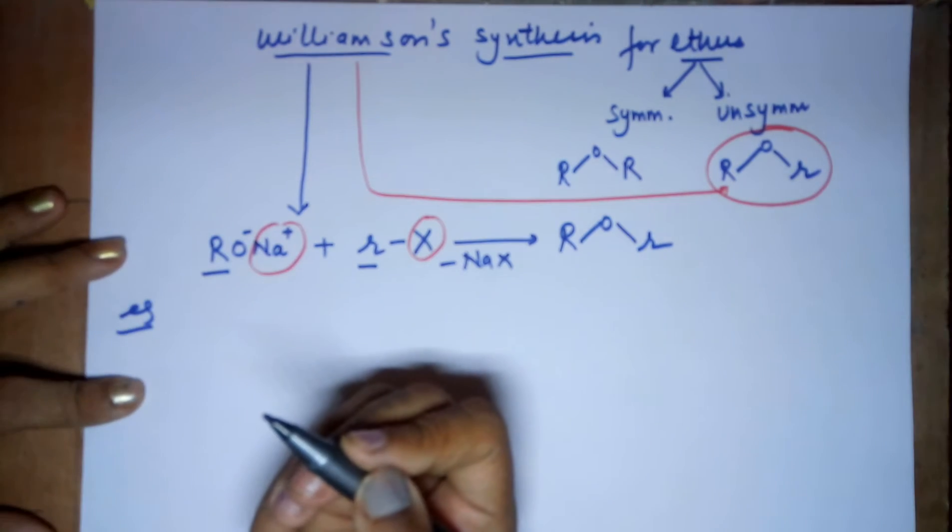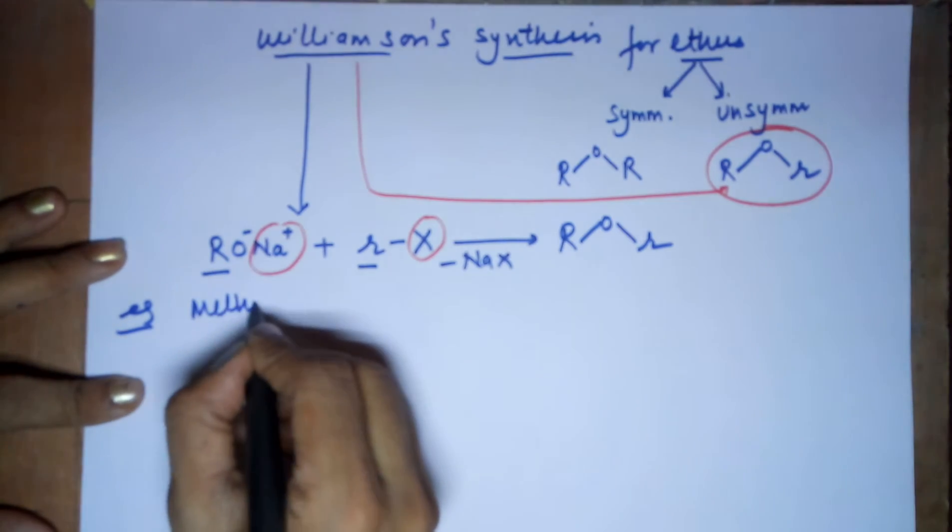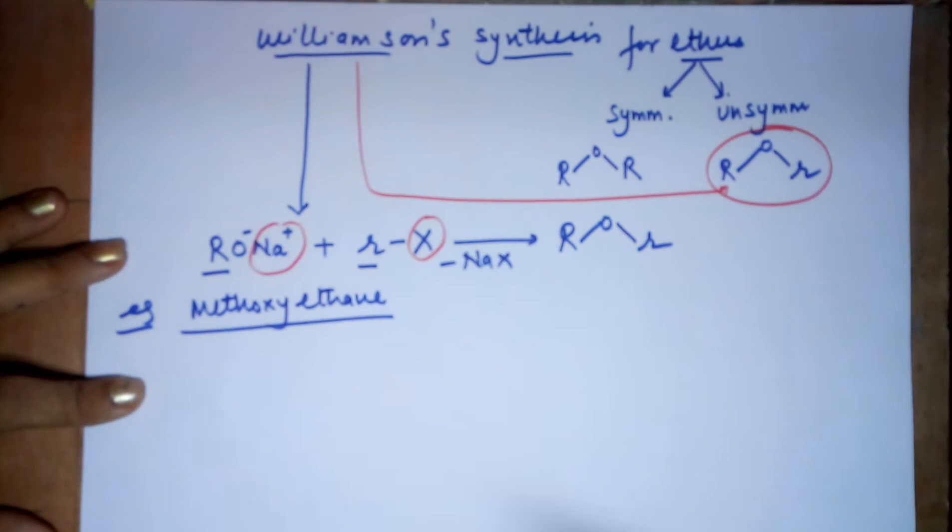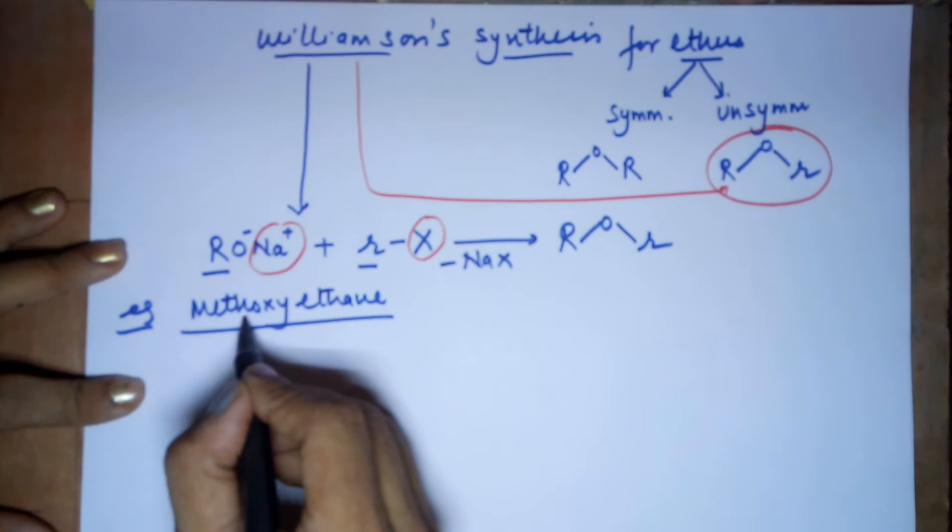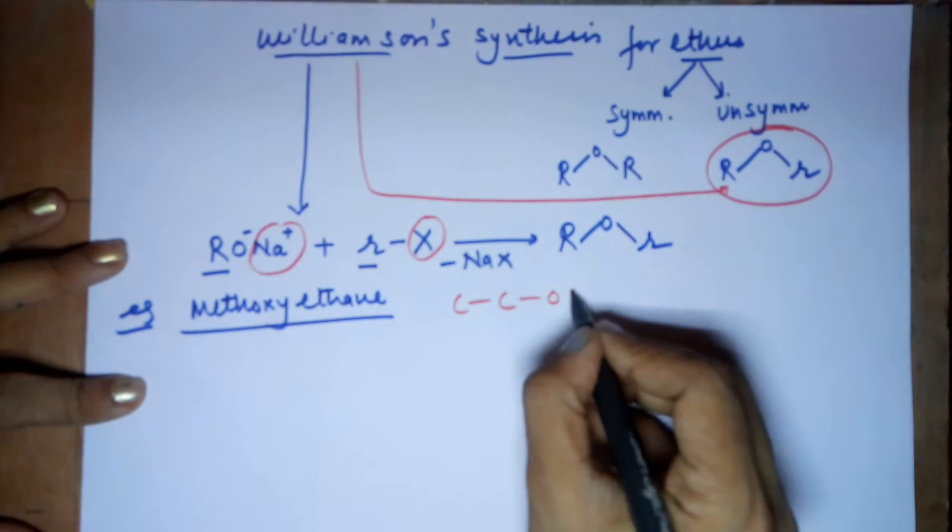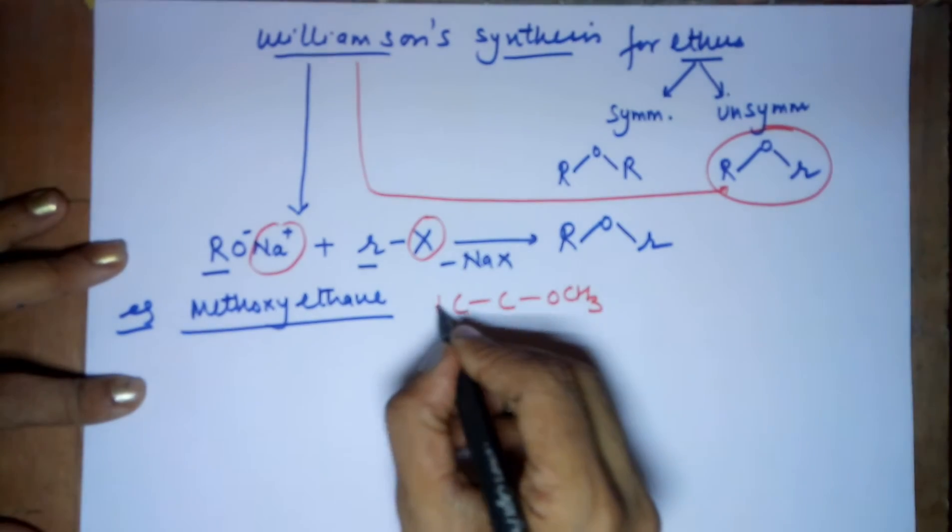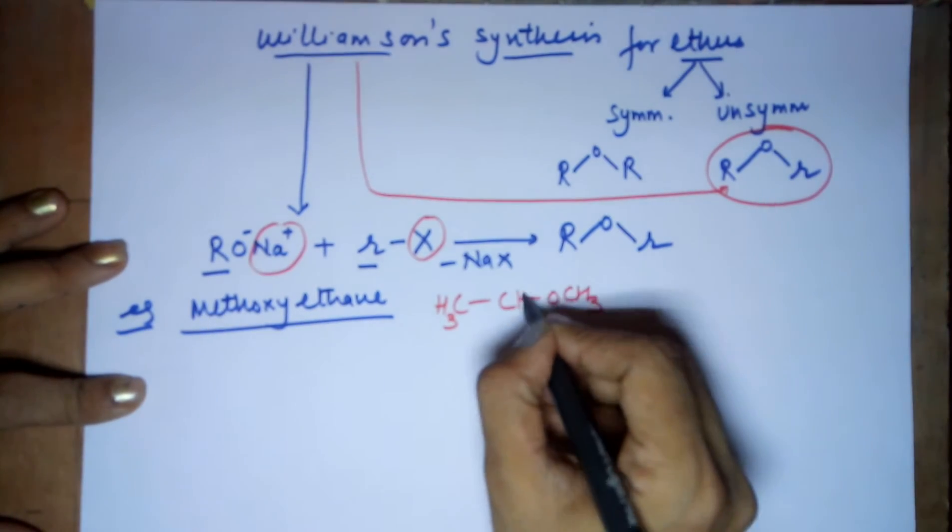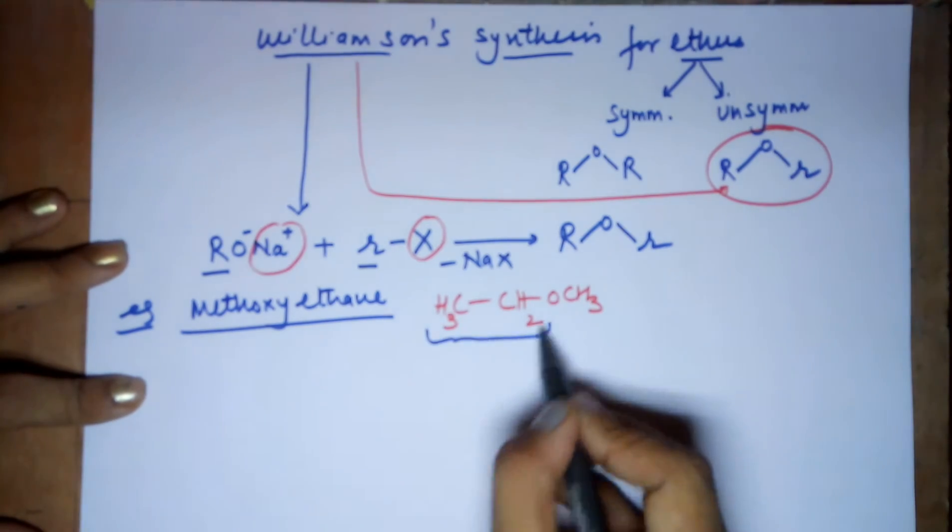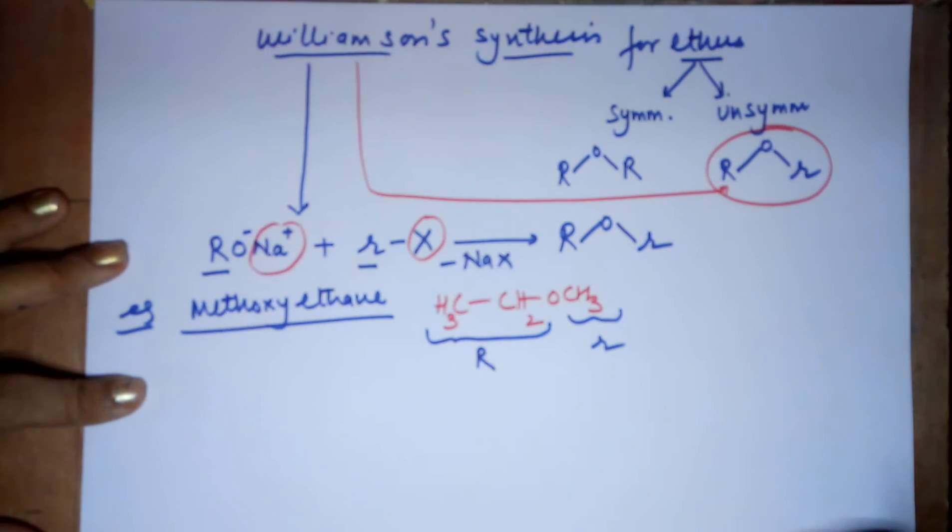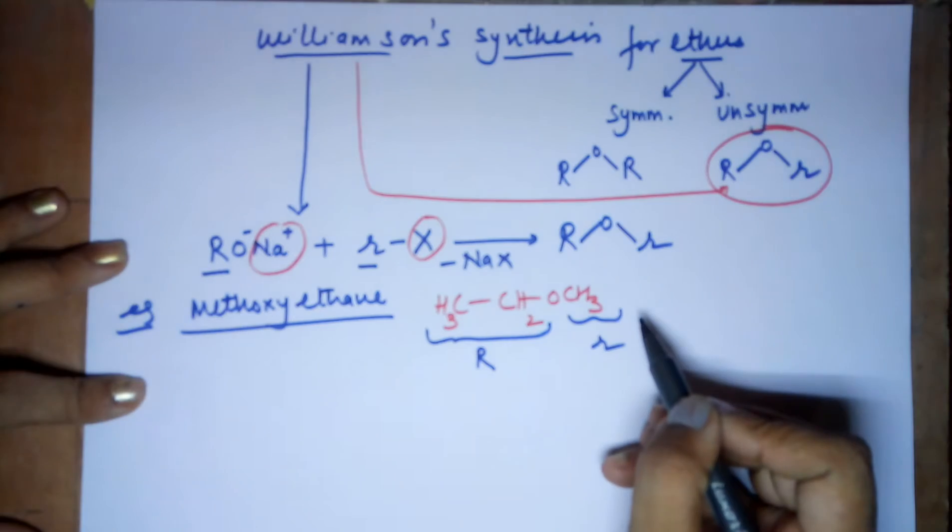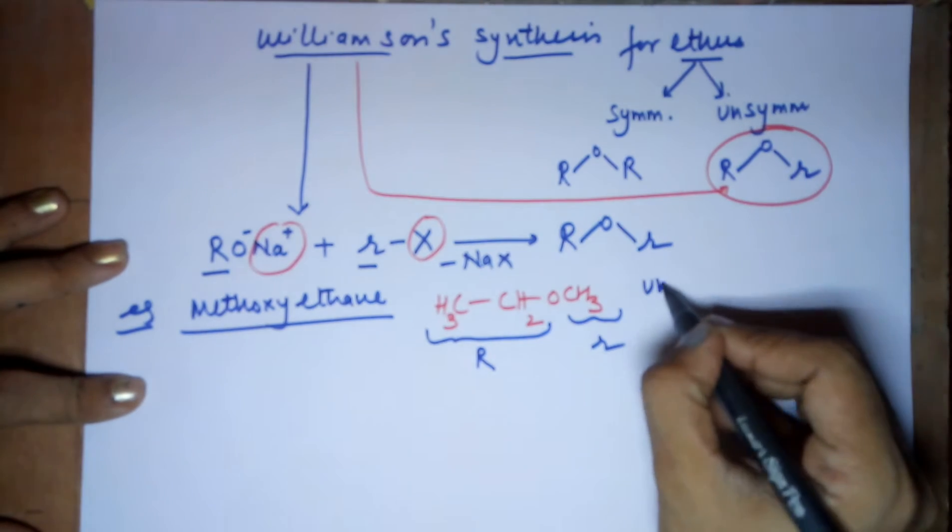Example number 1. I will be preparing methoxyethane. Now what is methoxyethane? Methoxy is OCH3. Ethane is 2 carbon unit. So in a 2 carbon unit, you have an OCH3 attached. Let's satisfy the hydrogens. 3 here, 2 here. So this is the ether that I intend to prepare. Where as you can see, one R-group is this, the other R-group is this and they are different. One you have an ethyl, the other you have a methyl. Since they are different, it becomes an unsymmetrical ether.